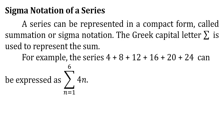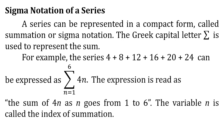For example, the series 4 plus 8 plus 12 plus 16 plus 20 plus 24 can be expressed as the sum of 4n from n equals 1 to 6. This expression is read as 'the sum of 4n as n goes from 1 to 6.' The variable n is called the index of summation.